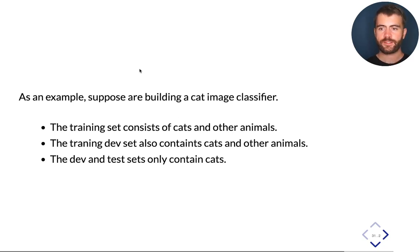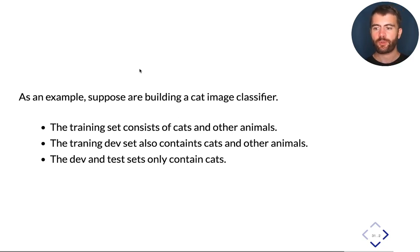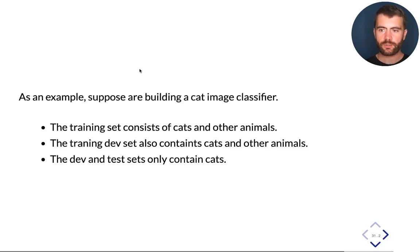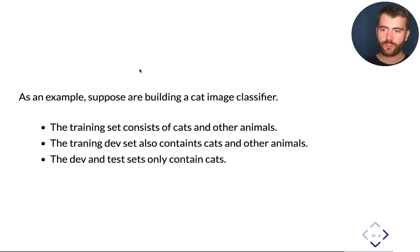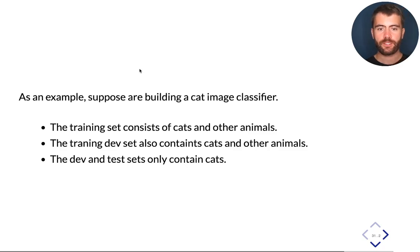Let's make this concrete with a few examples. Say we're building a cat image classifier and our training set consists of both cats as well as other animals, hoping that showing examples of other animals will help detect features like fur, eyes, or ears — elements useful for classifying both cats and other animals — and that a diverse, large data set will improve performance on cats specifically.